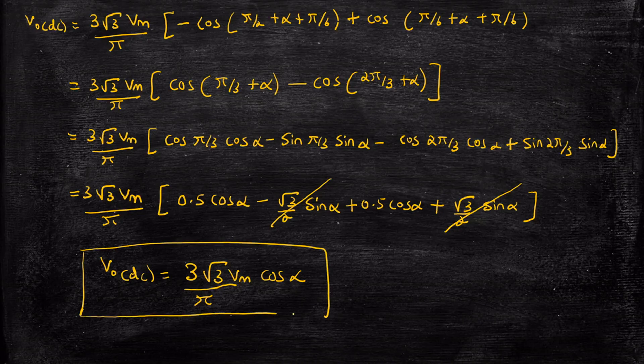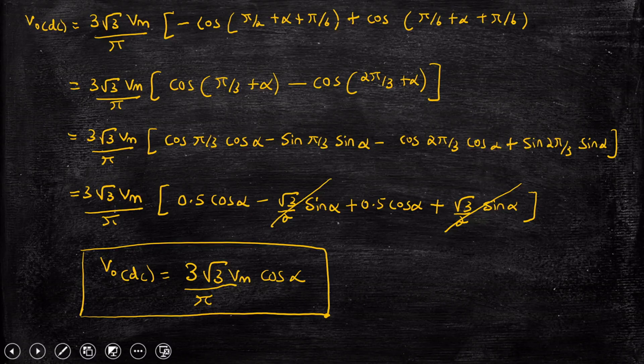This is the average DC output voltage for continuous conduction mode. If they ask for the average DC current for a resistive load, it is simply I_out_DC = V_out_DC / R. Now let's move into discontinuous conduction mode.